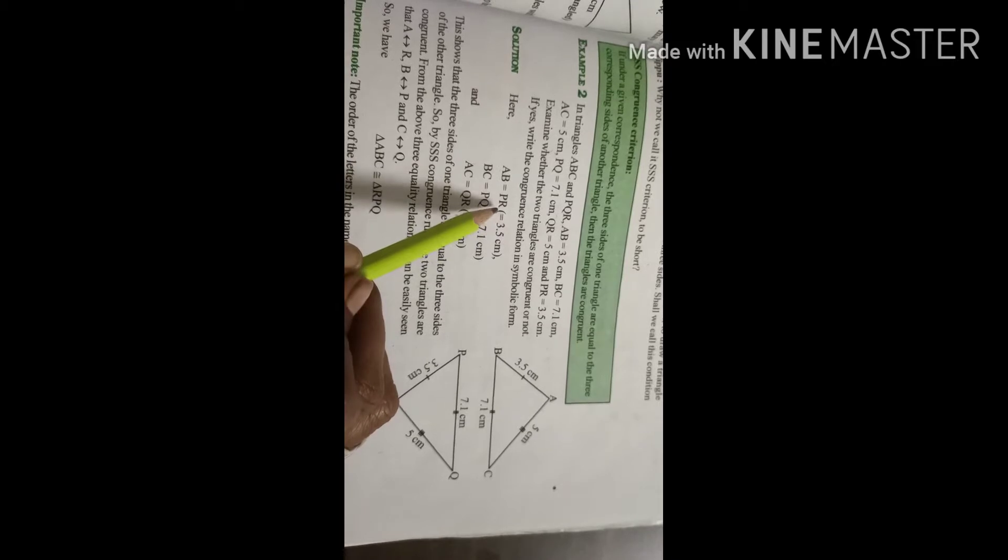AB corresponds to PR, BC corresponds to PQ, and AC corresponds to QR. For other components, what we can say? Point A corresponds to R, B corresponds to P, and C corresponds to Q.